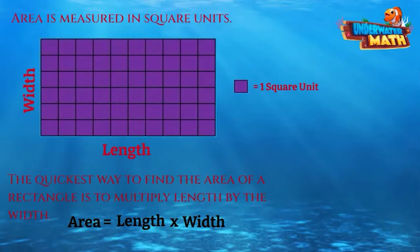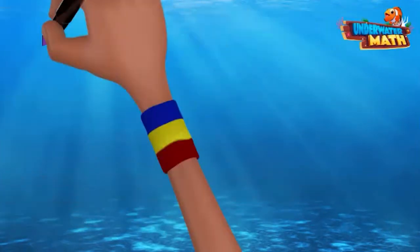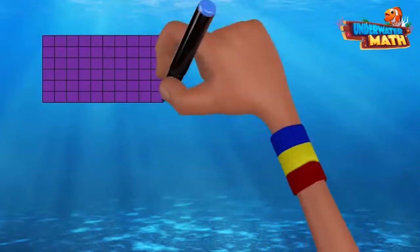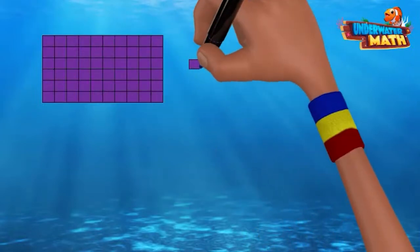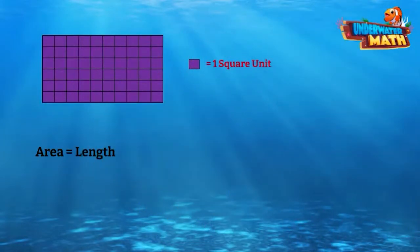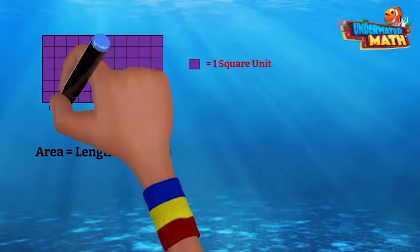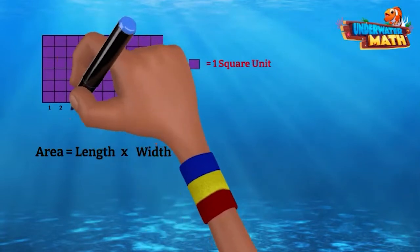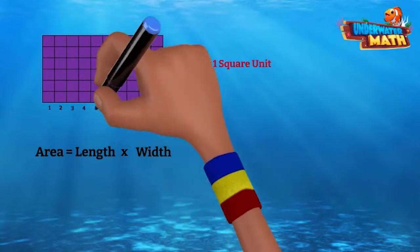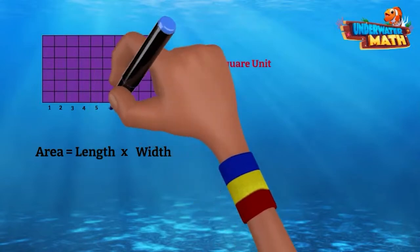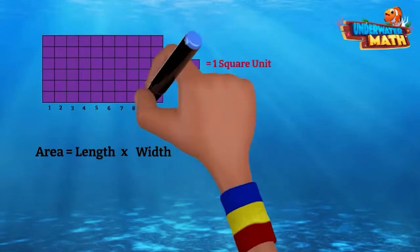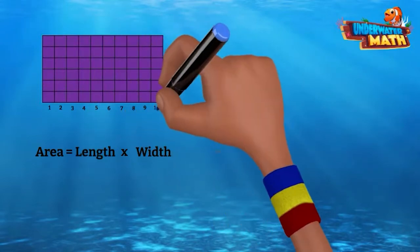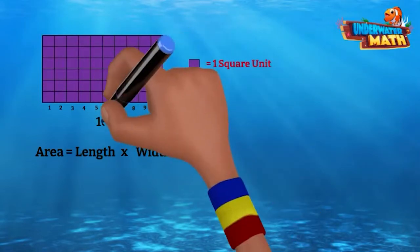Now let's try a practice problem. What is the area of this rectangle? Each square equals one square unit. Remember, to find the area you have to multiply the length by the width. Now let's count the length: 1, 2, 3, 4, 5, 6, 7, 8, 9, 10. There are 10 square units.